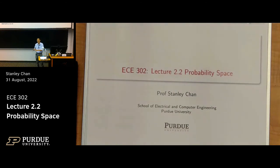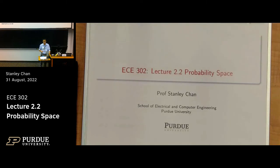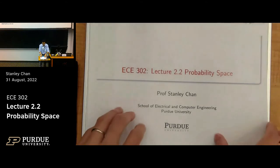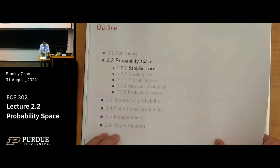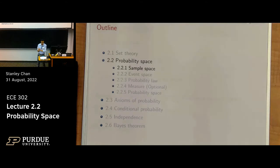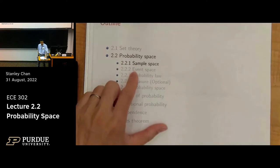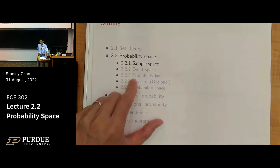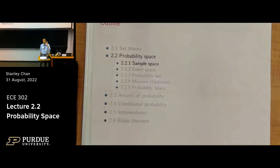When you're sitting down programming in Python or doing MATLAB, you don't need to go back to the axioms. However, if you do research in signal processing, statistical signal processing, or machine learning, you need to go back to define the proper measure space and to prove things. So without further ado — probability space requires three things: the sample space, the event space, and the probability law.